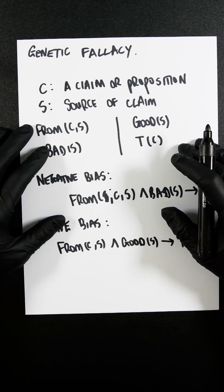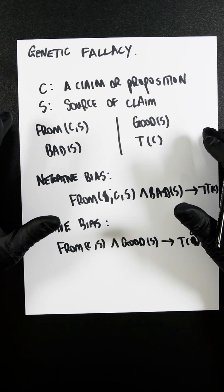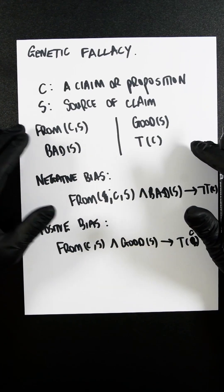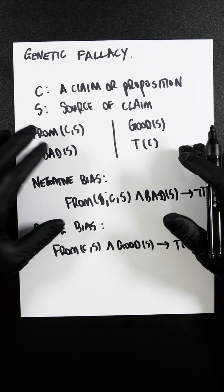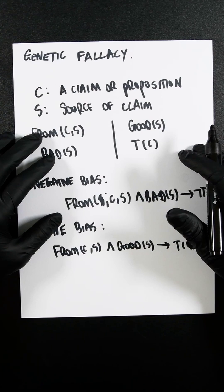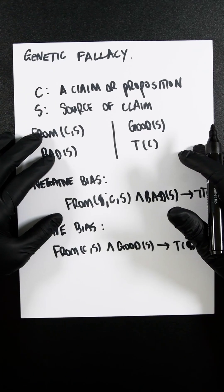So democracy is a valuable system of government. So a response to that would be, well, democracy was invented by slave owning Greeks, so it must be inherently flawed.